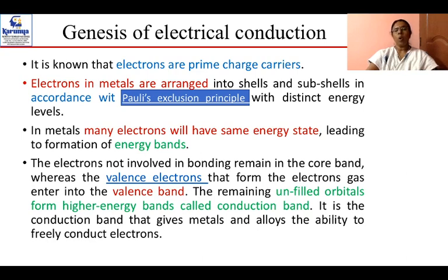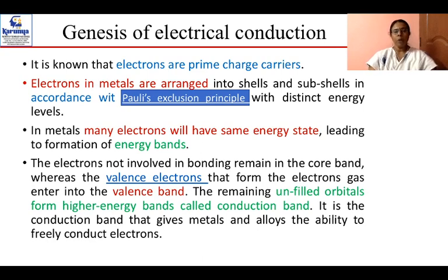In metals, many electrons will have the same state of energy, and this leads to the energy band. We have discussed the conduction and valence band and how the energy band gap varies for metals, semiconductors, and insulators. Electrons not involved in bonding remain in the core band, while electrons that form the electron gas enter the valence band. Unfilled orbitals form higher energy bands called the conduction band.